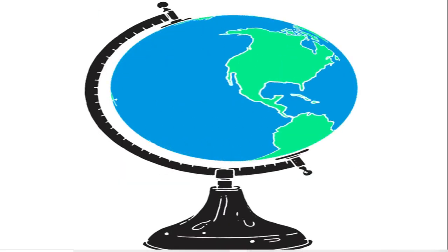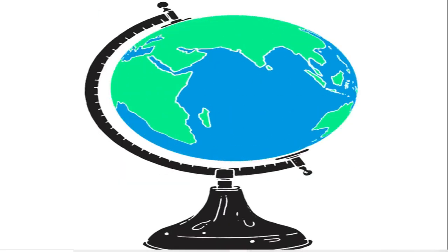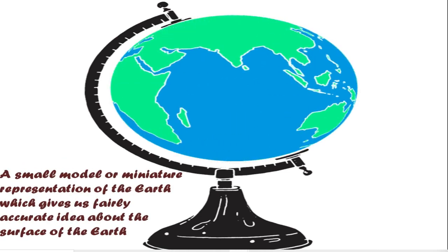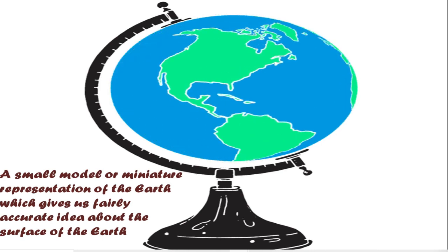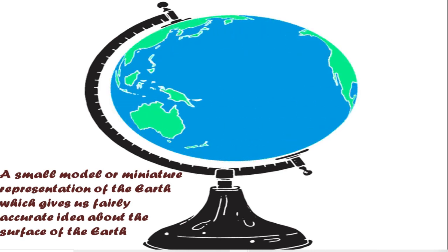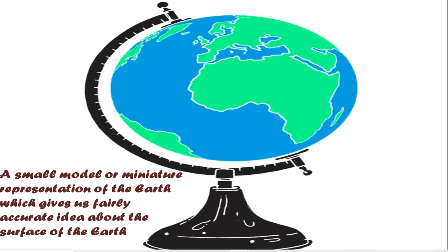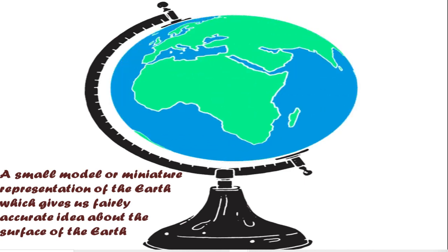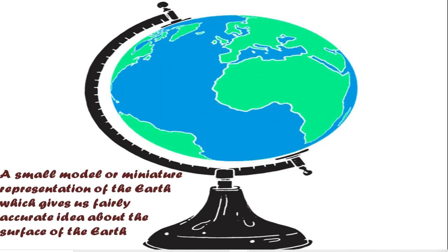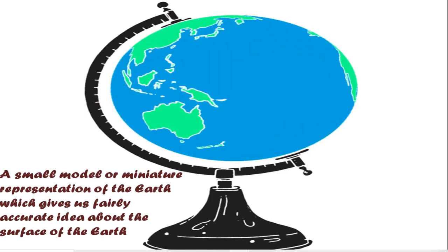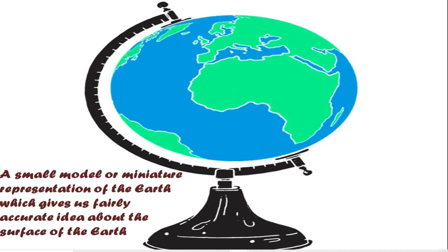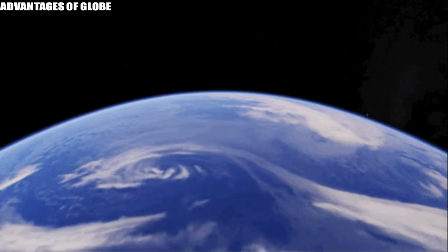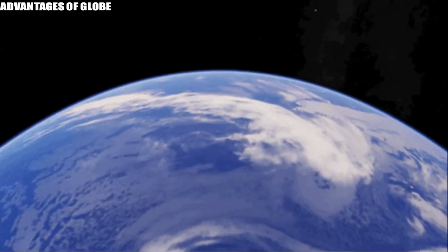One such tool is a globe. A globe is a small model or miniature representation of the earth which gives us a fairly accurate idea about the surface of the earth. It is an exact replica of the earth which helps us know about the features of the earth's surface.